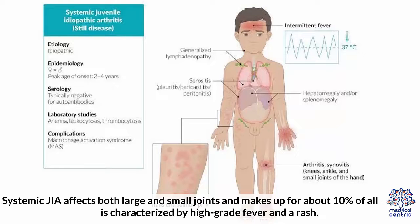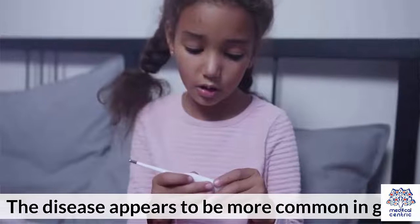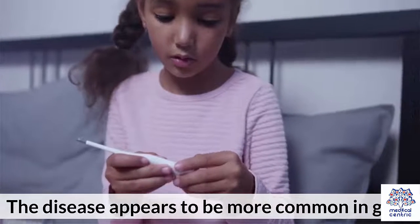Systemic JIA affects both large and small joints, and makes up about 10% of all cases. It is characterized by high-grade fever and a rash. JIA is a chronic disorder that can lead to serious complications if neglected. The chance of developing complications can be significantly reduced if proper follow-up with a health professional is practiced. The disease appears to be more common in girls.